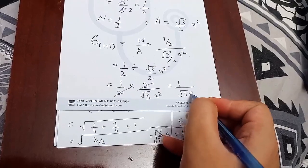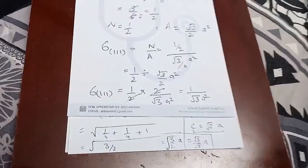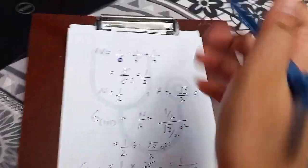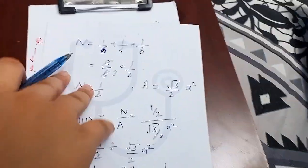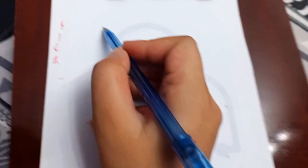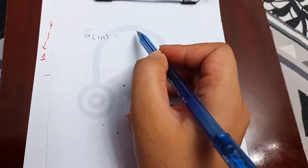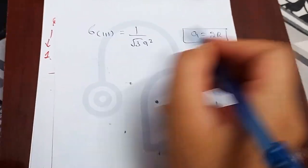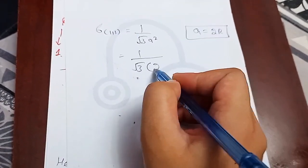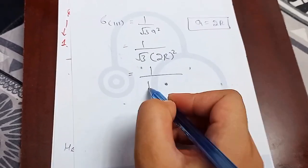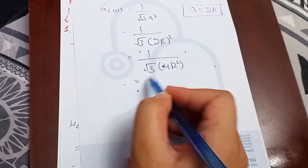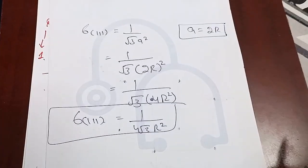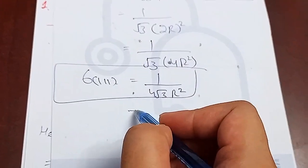Simplifying: (1/2) divided by (√3/2 · a²) = 1/(√3 · a²). This is the planar density for the (1,1,1) plane in terms of the lattice parameter. To convert to atomic radius expression, we use a = 2R for simple cubic, giving: 1/(√3 · (2R)²) = 1/(4√3 · R²).